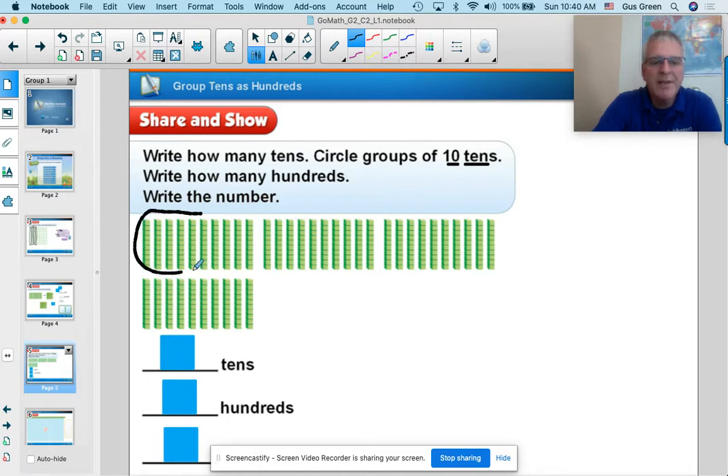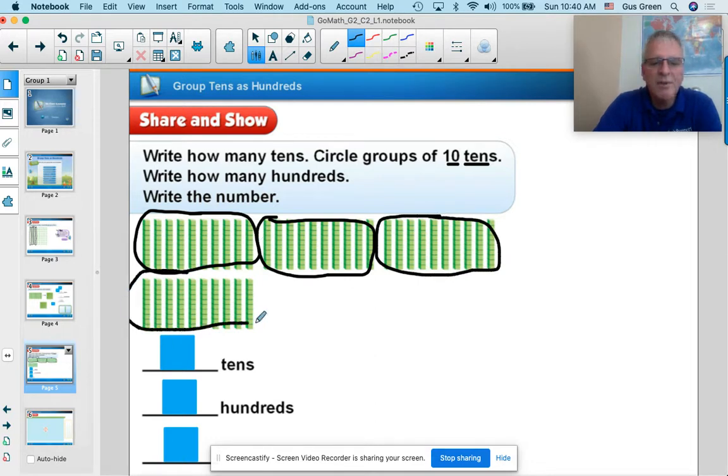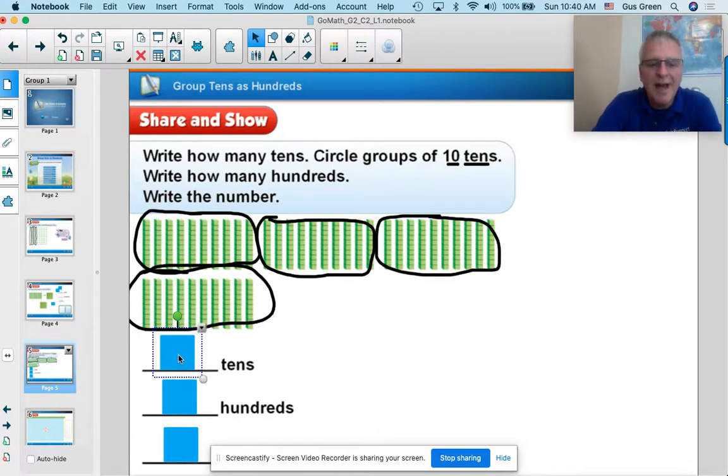So here's a group of 10 tens. 10 tens, that's 100, 10 tens, 200, 10 more tens, 300, 10 more tens, would give me 400. But you have to really listen to the question. The first one is, how many tens are there? So there's 10 tens here, 10 here, 10 here, and 10 here. So it would be 10, 20, 30, 40 tens.